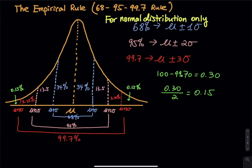For the 68% rule, we have mu right in the middle. 68% is mu plus or minus one standard deviation. You stand right in the center at mu, then take one step to the right and one step to the left — that captures 68% of the area. The total area under the normal curve is 100%. Since the graph is symmetrical, we have 34% plus 34% equals 68%.